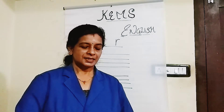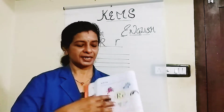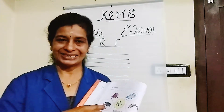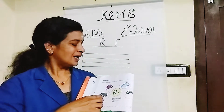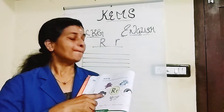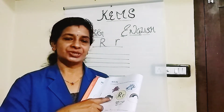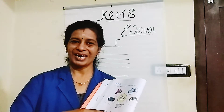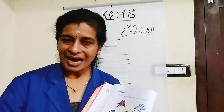Take page number 40. There is a small activity here. Circle and match the pictures which start with R. Do this activity.